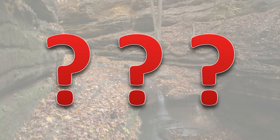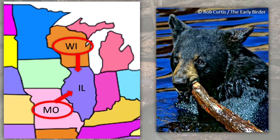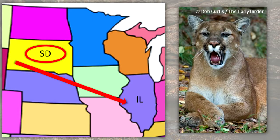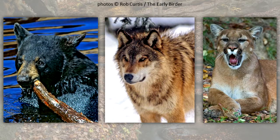Where are these animals coming from? It is believed that bears travel from Missouri and Wisconsin to Illinois, wolves come from Wisconsin, and cougars are traveling from western South Dakota. Most of them are young individuals that are seeking a place to live.